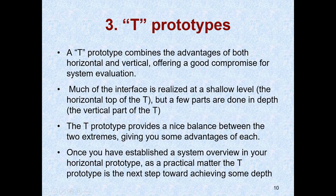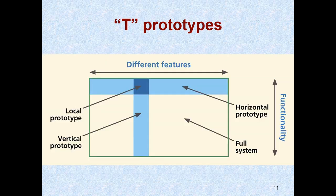The third type is the T prototype. T prototype is a combination of horizontal and vertical. Most products made in the market work on the T prototype. Its advantage is that it has both features and functionality in a good balance — horizontal as well as vertical.